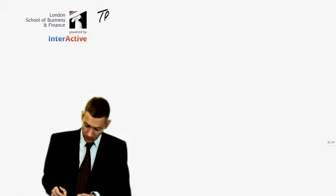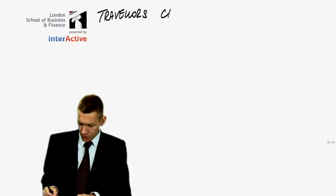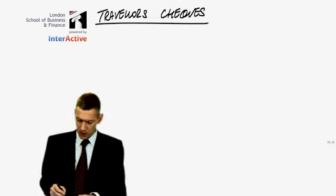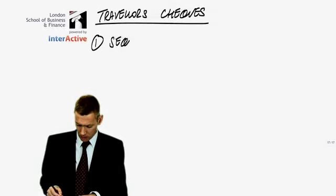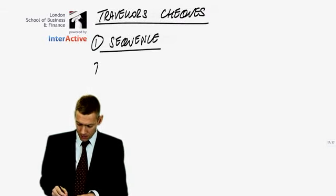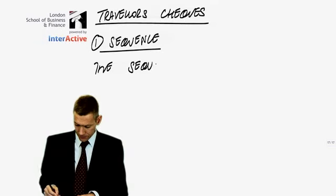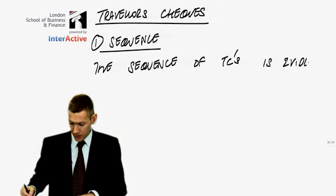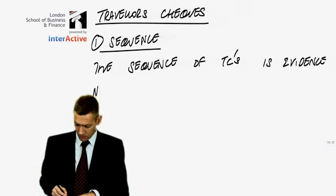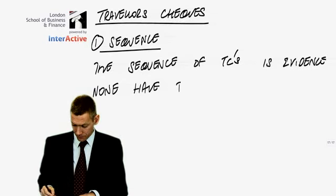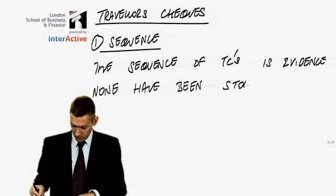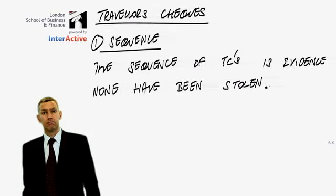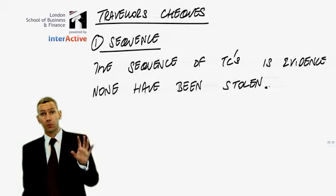And then just one for this one here. Traveller's checks. Do you know traveller's checks come in books? And those books have a sequence. The main thing to check is the sequence. The sequence of TC's is evidence none have been stolen. And there we have it. So we've finished the bank. We've finished bank and cash.